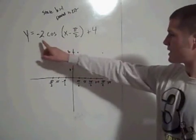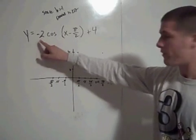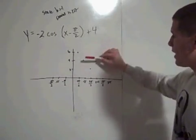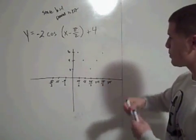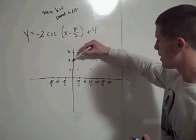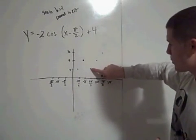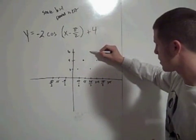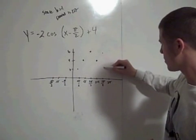I know my amplitude is 2, but since the value of a is negative, I've got to reflect these over the line y equals to 4. Which means, this point is reflected over the line y equals to 4. That's here. This point reflected over the line y equals to 4 stays there. This point is reflected over the line y equals to 4, so that goes up to 6. This stays where it is, and this comes down to 2.